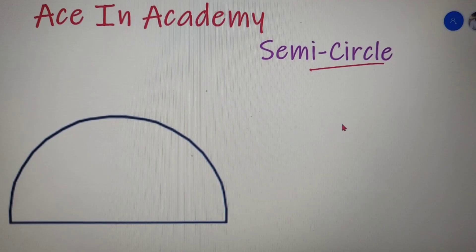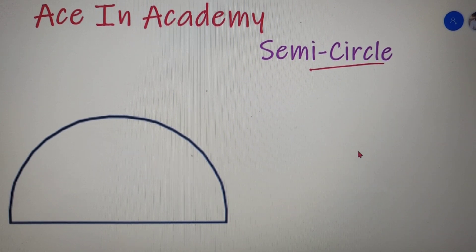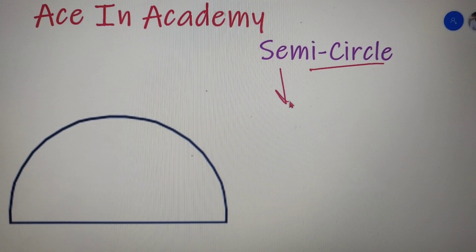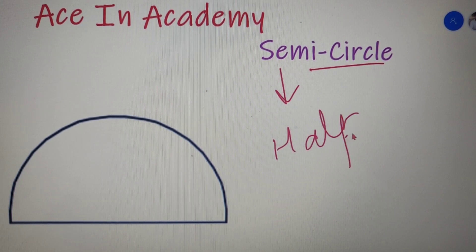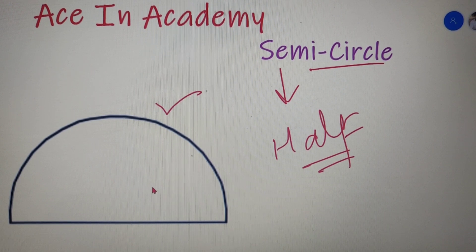The definition of a semicircle is that it is a 1D locus of points that forms half a circle. From the word 'semi' itself you can understand that a semicircle is half of a circle. The shape that we have over here is a semicircle — you can see that it is half of a circle.